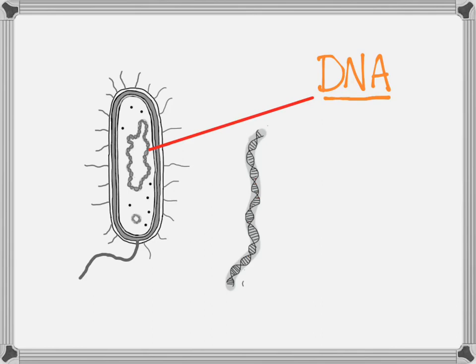It's got rungs going between the sides of the ladder, and it's an incredibly long molecule. While on a ladder the rungs are all identical, in DNA those rungs are actually made of only four chemical pieces.